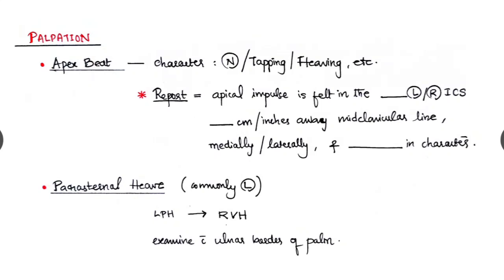Its character must be noted, like normal, or it is tapping, or whether it is heaving, etc. And we have to report the apex beat like apical impulse is felt in the fifth or sixth left or right intercostal space. Mostly it is left, a dash centimeter, around a half an inch away from the mid clavicular line medially or laterally, and it is heaving or tapping in character.